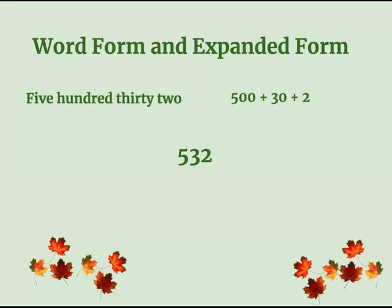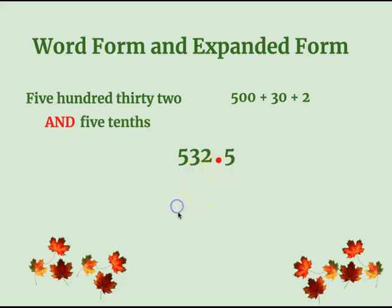The number 532 — notice I did not say the word 'and' because there is no decimal in there yet. The word 'and' we reserve only when we have a decimal. Look, there's an 'and' — the word 'and' lets us know there's a decimal coming. 532 and 5 tenths. So when we add all of those things together, we get 532 and 5 tenths.